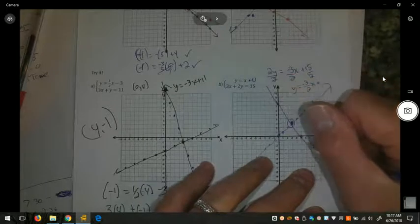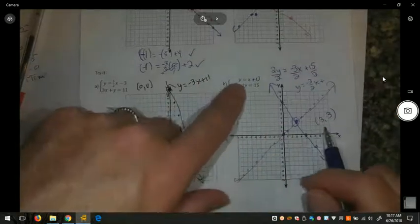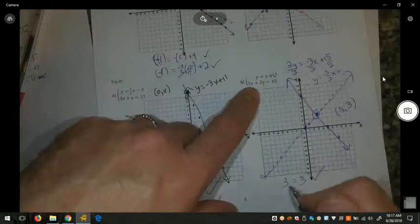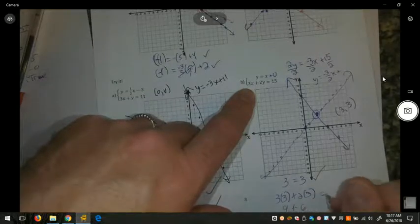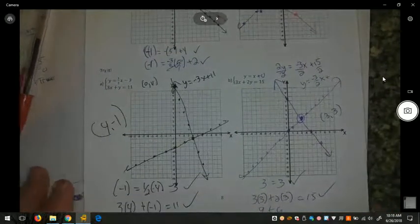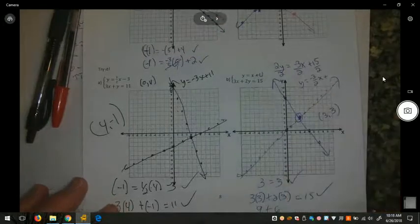But we at least have, we know that it's accurate from the slope that we found. We're going to check that by plugging it in. Does when y equals 3, does x equal 3? Yes. When x equals 3, 3 by 3 is 9, plus 2 by 3 is 6, and 9 plus 6 is 15. So we know we have the correct intersection point, the correct solution to both equations.